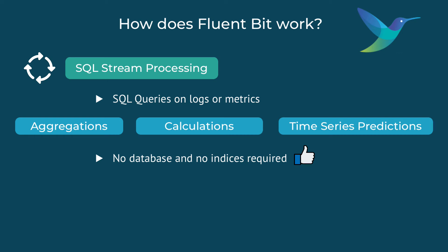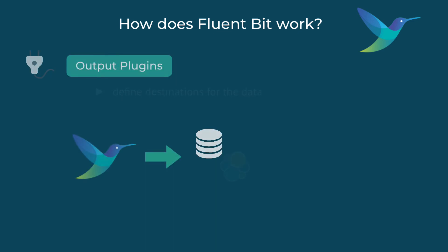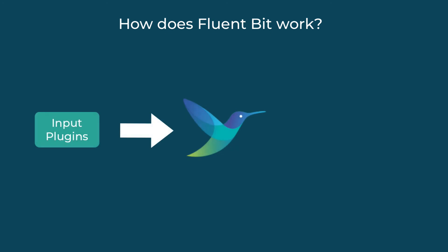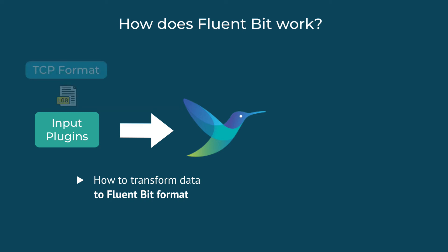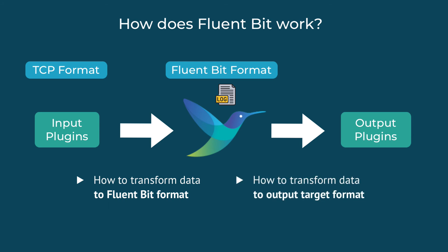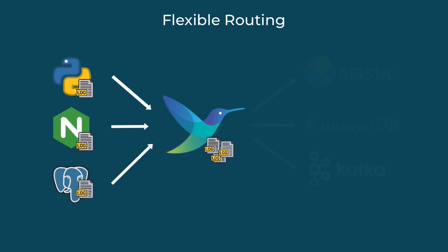After the logs are processed, FluentBit will send them to a storage like Elasticsearch or Splunk, where you can then see the logs in a nice visualized format. FluentBit supports many different storage backends, and to send the logs to those backends, it uses output plugins. The input plugin knows how to transform the data of a specific format into what FluentBit can read and process. An output plugin knows how to transform the FluentBit data into what the output target understands. In FluentBit, you can send logs from multiple input sources to multiple output destinations.